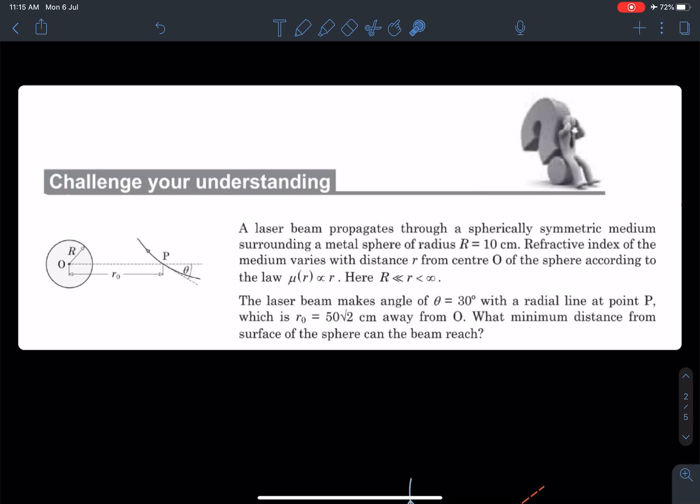I hope you've understood this situation. Now, the laser beam makes an angle of 30 degrees with a radial line at point P, which is at 50√2 centimeters away from O.